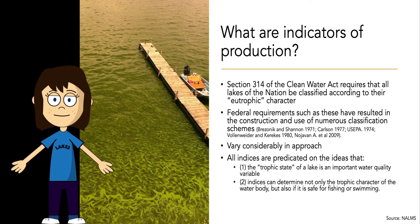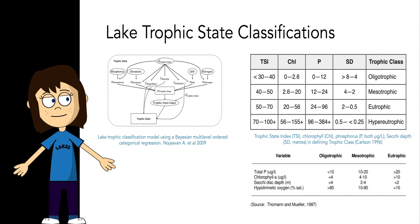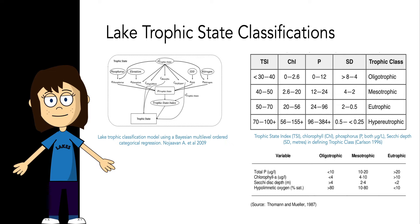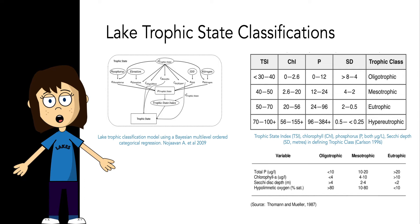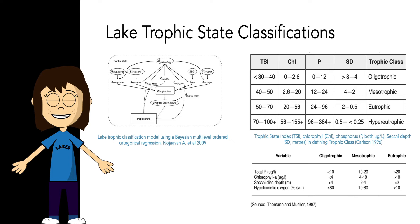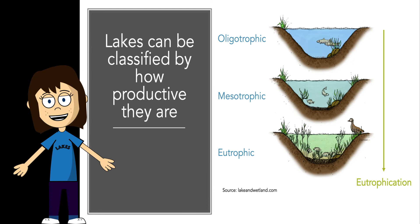Indices can determine not only the trophic character of a water body, but also if that lake is safe for fishing, swimming, and other human activities. One of the most famous is Carlson's classification system, which differentiates lakes into trophic classes of oligotrophic, mesotrophic, eutrophic, and hypereutrophic based on chlorophyll concentrations, phosphorus concentrations, and Secchi depth. Even if you just have one of these measurements, you can make an educated guess as to the trophic status of that lake. However, these classification schemes ignore lakes such as dystrophic lakes that may have high nutrient concentrations but also really high concentrations of organic matter.